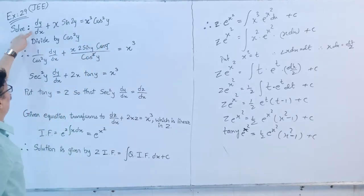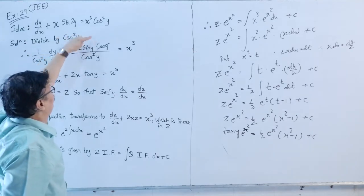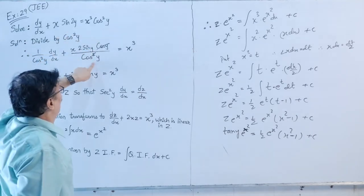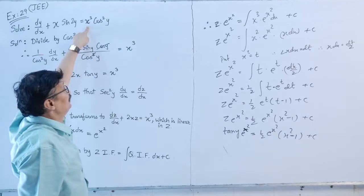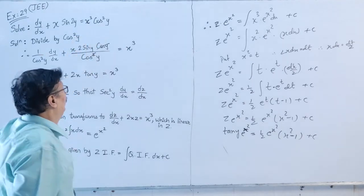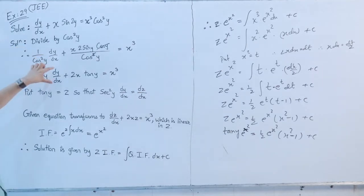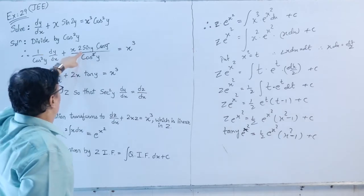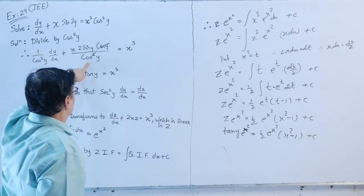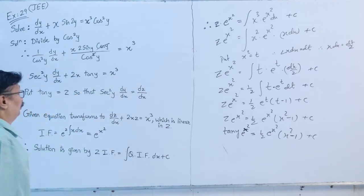Dividing through by cos²(y): sec²(y)·(dy/dx) + x·(2·sin(y)/cos(y)) = x³. That is, sec²(y)·(dy/dx) + 2x·tan(y) = x³. Now notice sec²(y)·(dy/dx) and tan(y) — the substitution tan(y) = z is natural here.